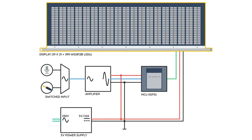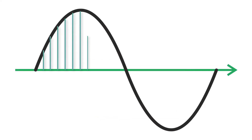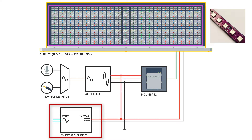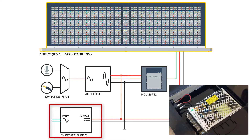Back to the schematic. The amplified audio signal from the microphone or audio jack reaches the ESP analog input. The signal is then sampled using the mentioned converter and the measurements are stored. Energy is supplied from a separate 5V 22A power supply. Each of the diodes consumes up to 60mA, so the entire device can use up to 24A. Therefore, the program should have a set limit on display brightness.